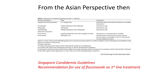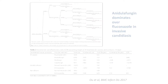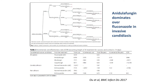Despite all the moves towards the echinocandins, in our local guidelines we had actually still pushed for the use of fluconazole as first-line treatment, more from a practical point of view. But having said this, many of us remain pretty much tied down to the patient in front of us — the amount you have to pay when you use an echinocandin. Little sometimes do we think ahead as to what happens if you use amphotericin B or fluconazole and the patient turns out to have resistance, then runs into complications and extended hospital stays.